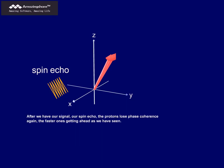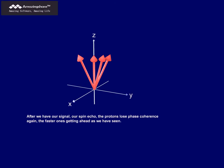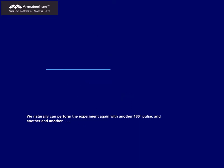After we have our signal, our spin echo, the protons lose phase coherence again, the faster ones getting ahead as we have seen. We can naturally perform the experiment again, with another 180-degree pulse, and another, and another.